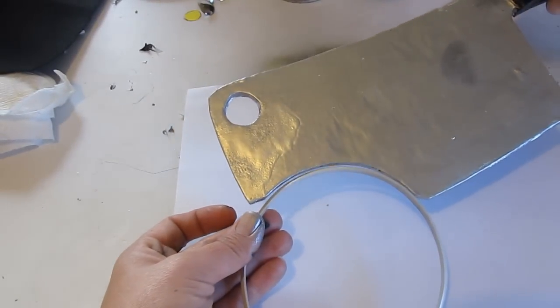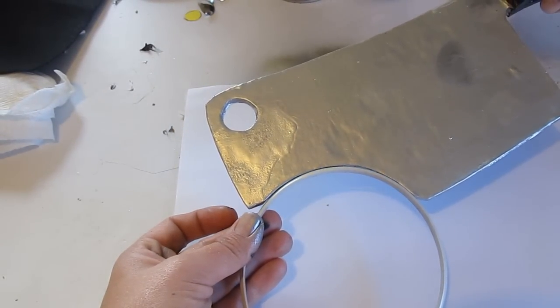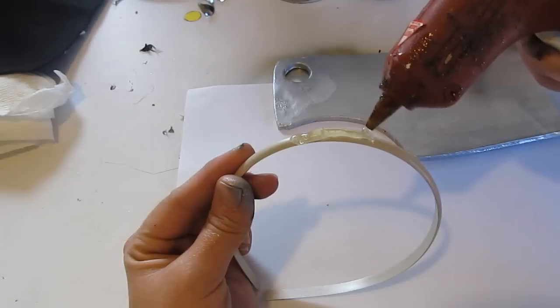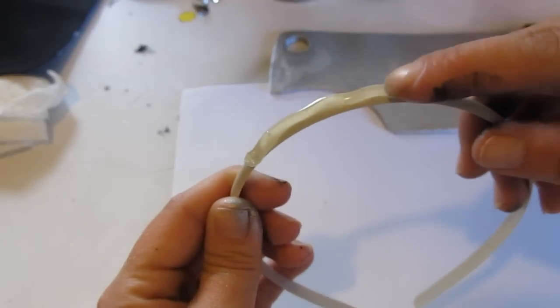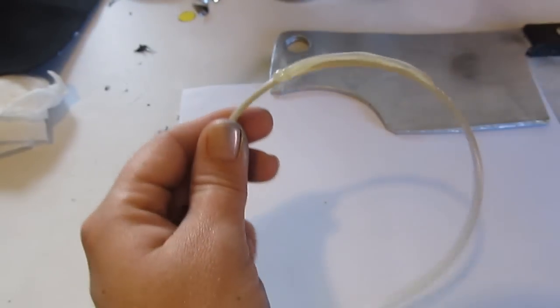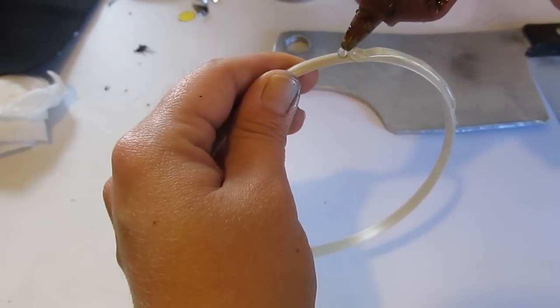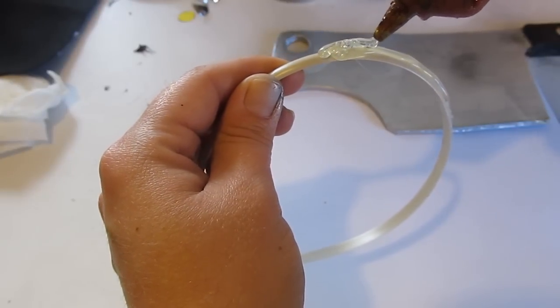Now we're going to attach it to the headband. And, you know, fit it and try it and take a look and see how it fits. If it's a good fit. You can always carve the cleaver a little bit to try to get it to fit better, or you can build up hot glue on the headband like this.